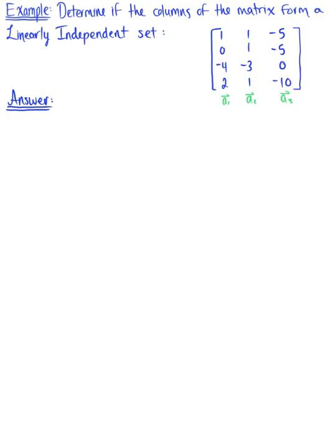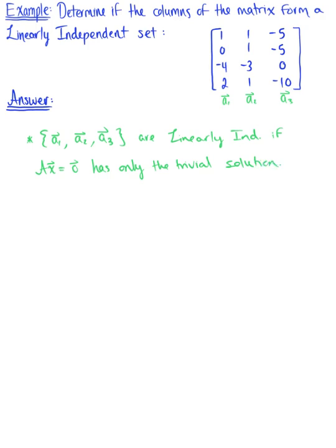We know by definition that an indexed set of vectors, defined by the column vectors of a matrix — vectors a sub 1, a sub 2, and a sub 3 — are linearly independent if the corresponding homogeneous equation, matrix A times vector x equals the zero vector, has only the trivial solution. In other words, these vectors form a linearly independent set if no free variables exist.